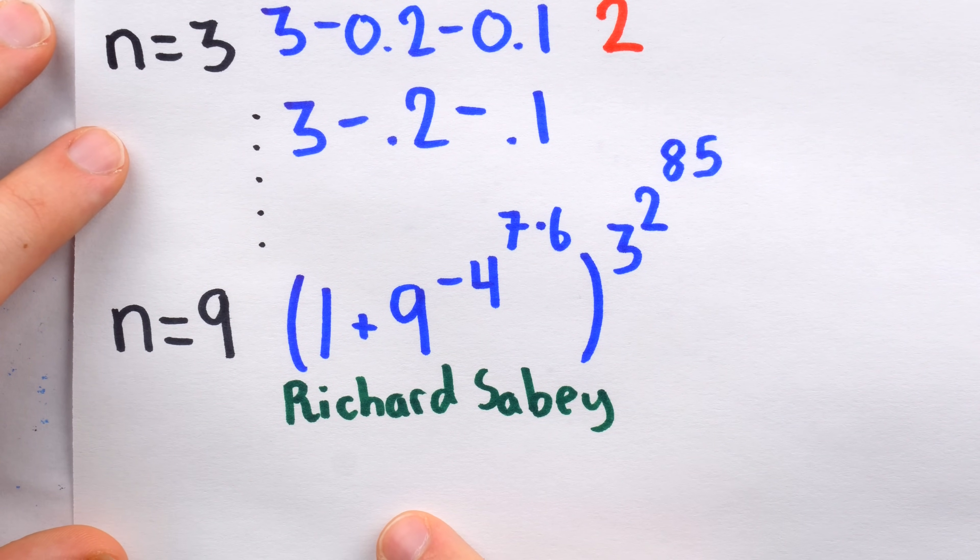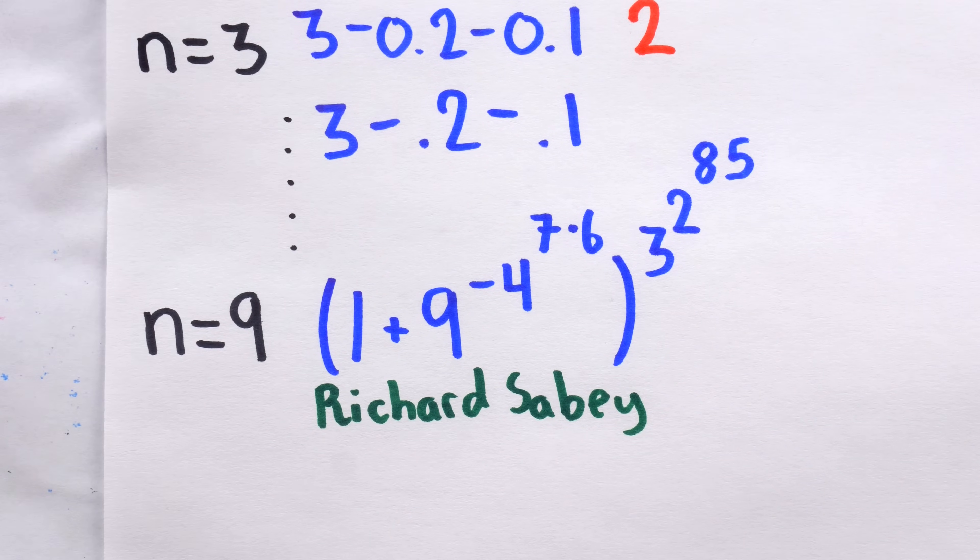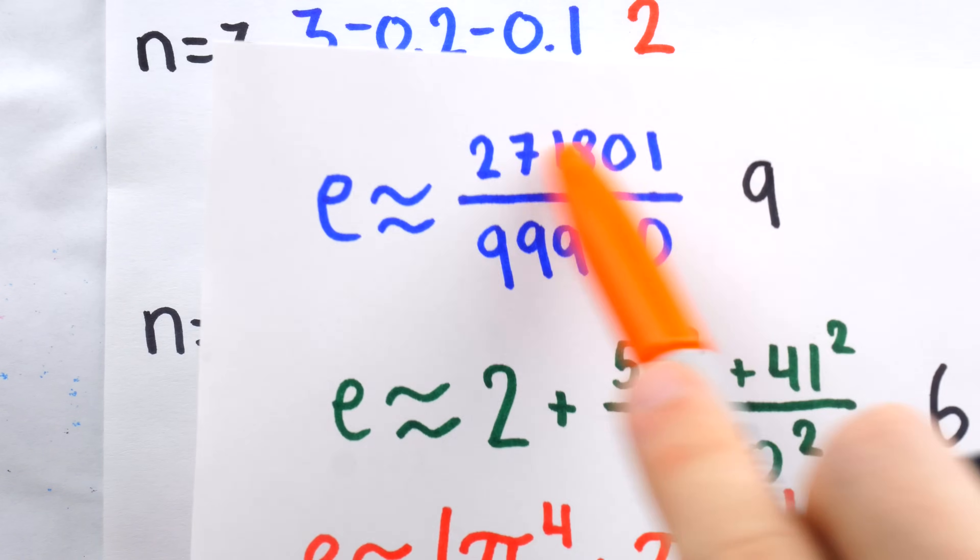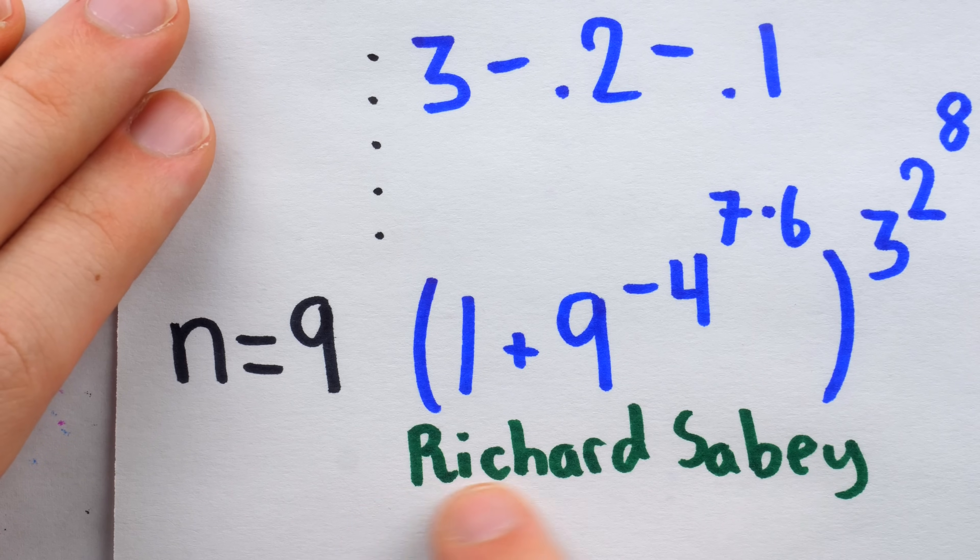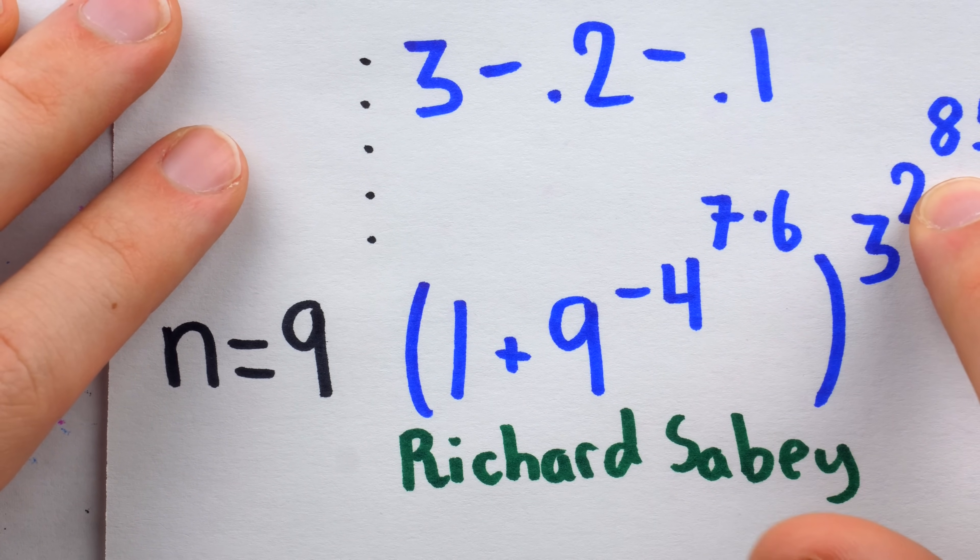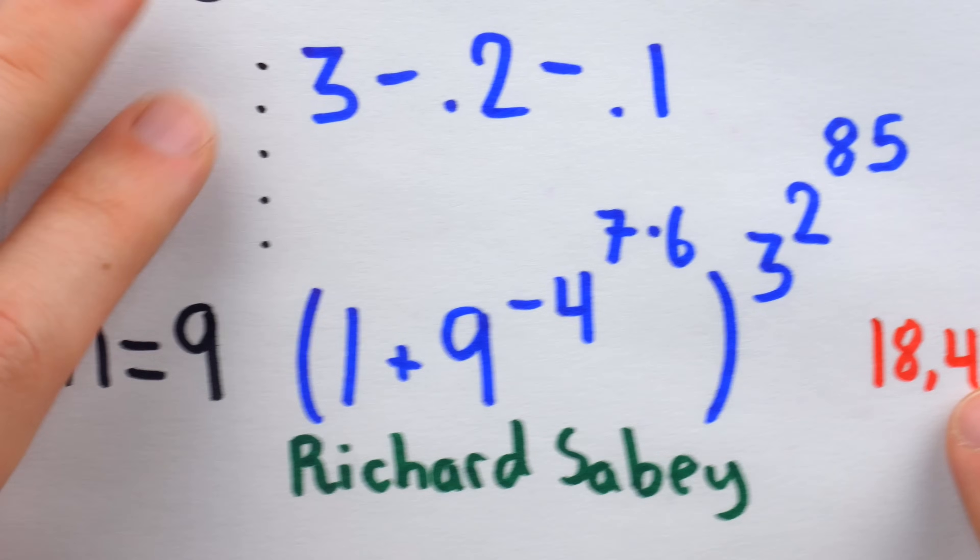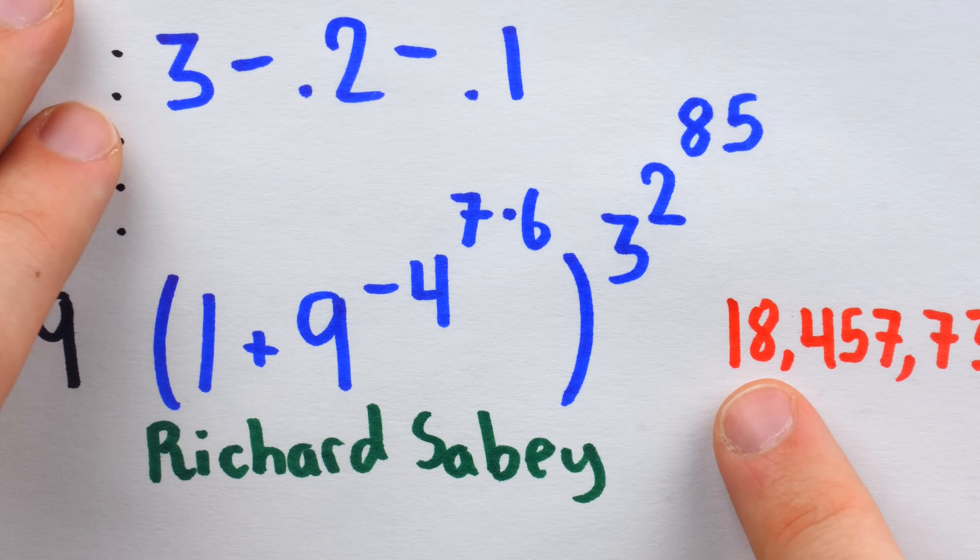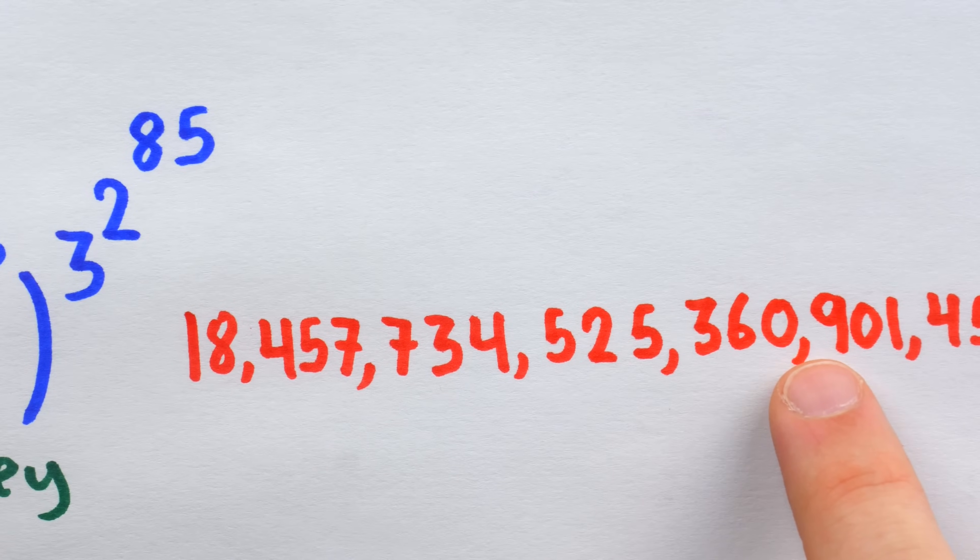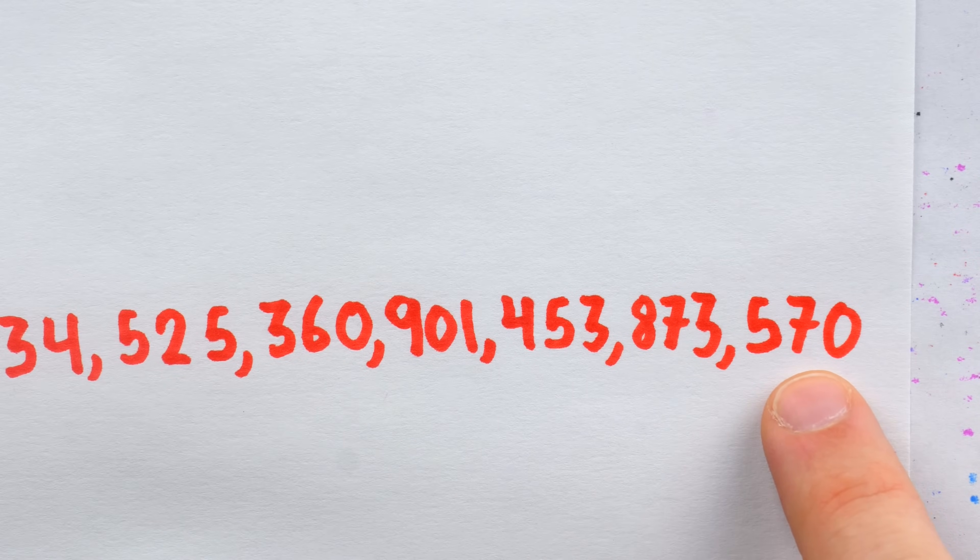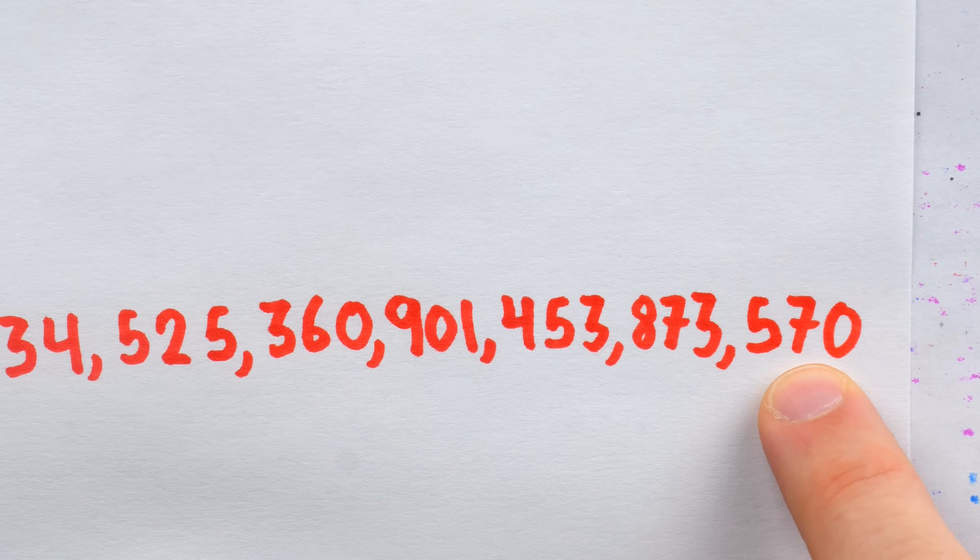This is a pan-digital approximation of e, which is astonishingly accurate. The best approximation we've seen so far was this one, which was accurate to 9 places after the decimal point. But Richard Saby's pan-digital approximation of e is accurate to 18 septillion, 457 sextillion, 734 quintillion, 525 quadrillion, 360 trillion, 901 billion, 453 million, 873 thousand, and 570 decimal places.